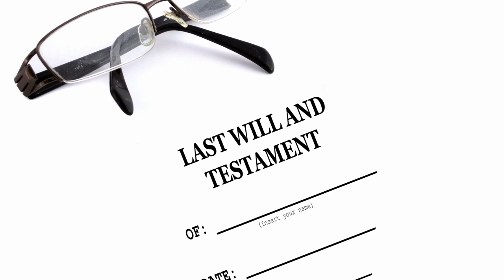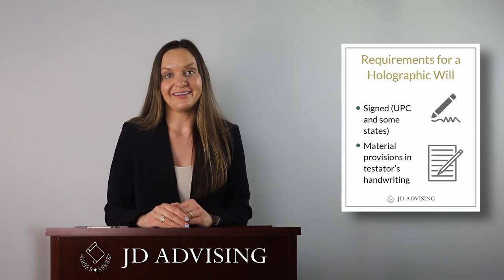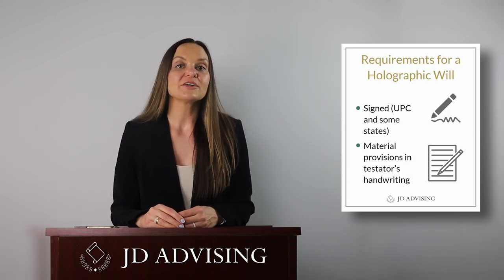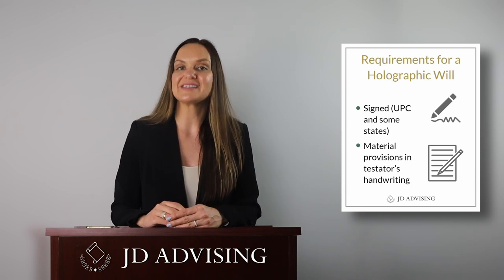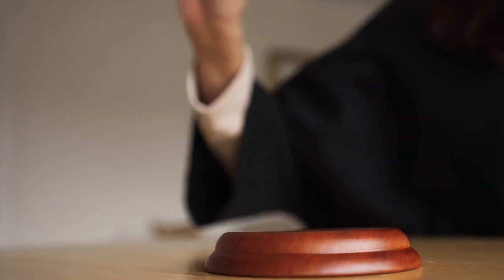The next highly tested issue is the validity of a will. In most states, a valid will must be in writing, signed by the testator, and witnessed by two witnesses. Additionally, the testator must be 18 years or older and have the intent that the document be their will. A holographic will is an unwitnessed will, and it's recognized in about half of the states. On the MEE, if you see an unwitnessed will, do not just assume that it's not valid — assess whether it's a holographic will. Holographic wills are valid if they're signed and the material portions are in the testator's handwriting. States that follow the Uniform Probate Code (UPC) recognize the dispensing power, which allows the court to probate an otherwise invalid will if there is clear and convincing evidence that the decedent intended that document to be their will.